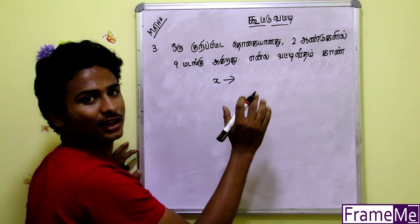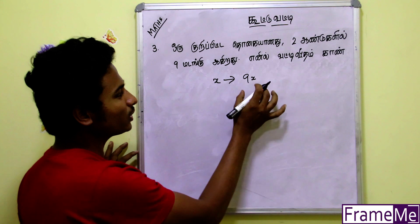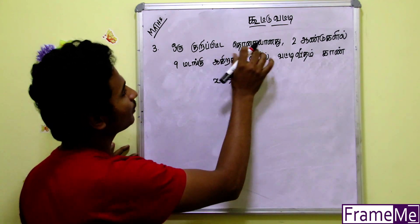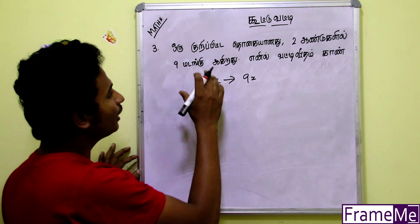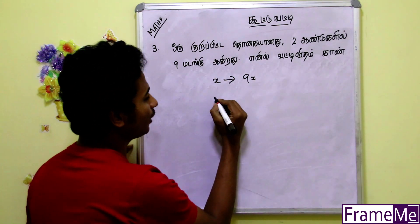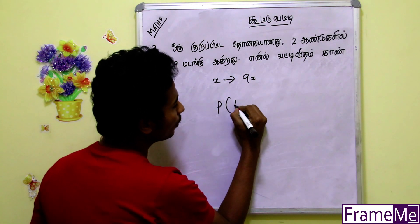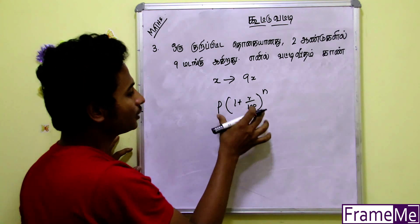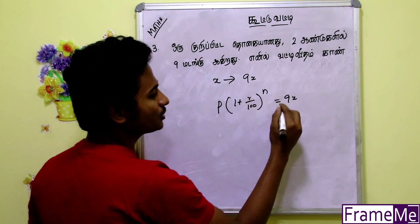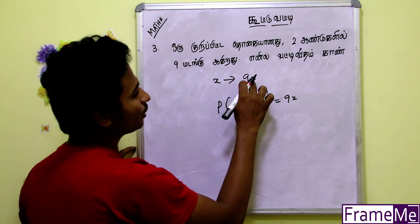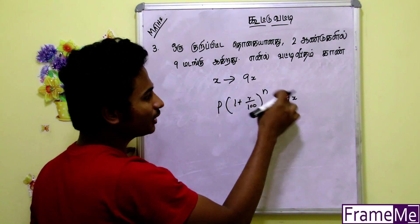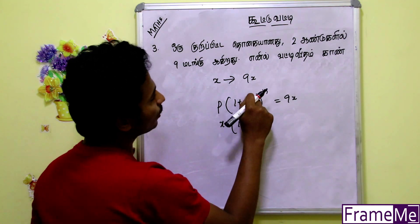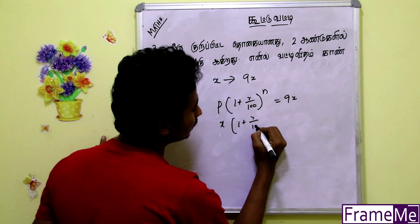In the 2x, the 9x is 9x. So if you tell me, there is a 9x. So let's add x. The 9x is 9x. This is the formula: P into 1 plus R by 100 whole power N. This is the formula. So this is the first 9x. Let's add x here. If we add x here, this is P into x.